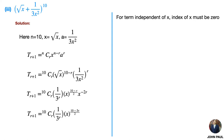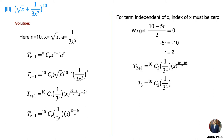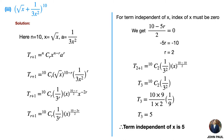For the term independent of x, the index of x must be 0, that is (10 − 5r)/2 = 0. By simplifying we find r = 2. Substituting r = 2 we get T3 = 10C2 · (1/3)². Now 10C2 = (10×9)/(1×2) and (1/3)² = 1/9. By simplifying we get T3 = 5. Therefore the term independent of x is 5.